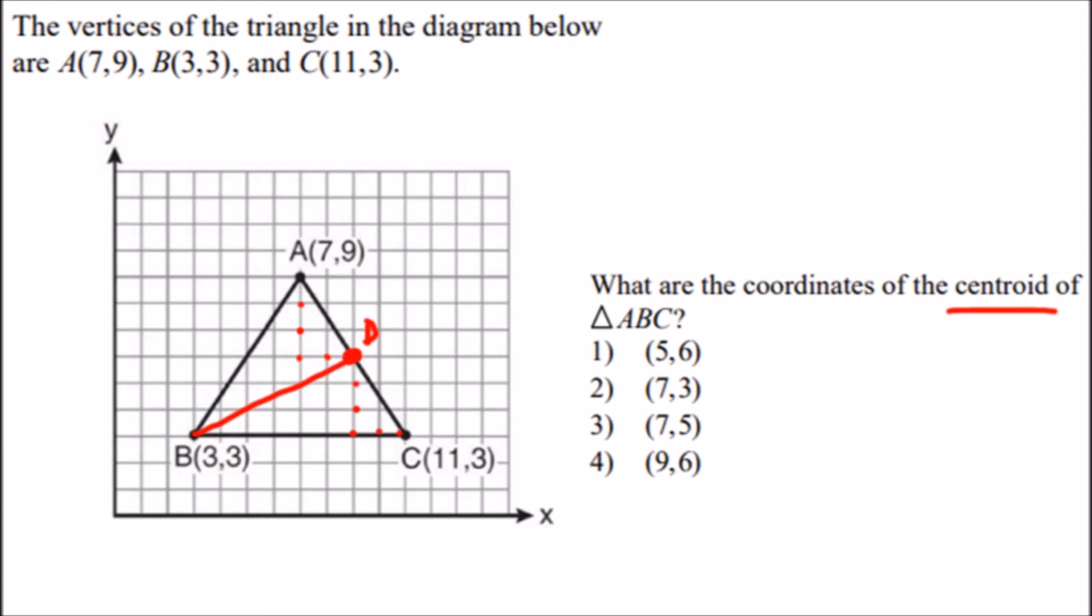Now the easiest remaining median to construct is from point A to side BC, because BC is horizontal. The distance from (3,3) to (11,3) is eight units across, so the midpoint is four units over.